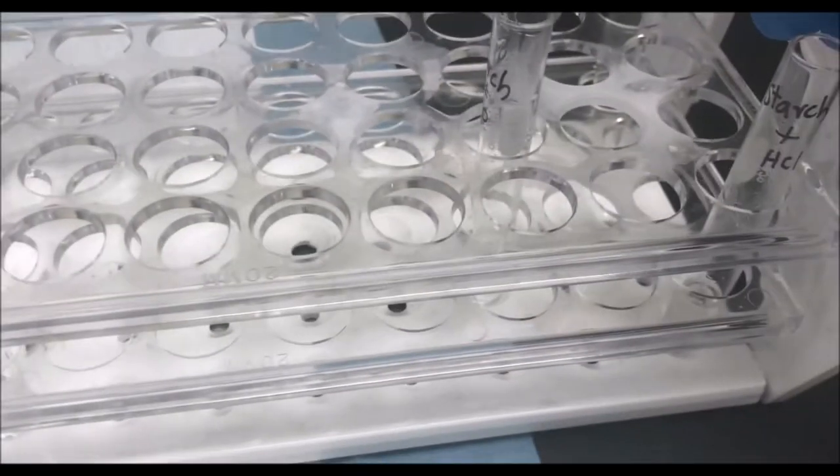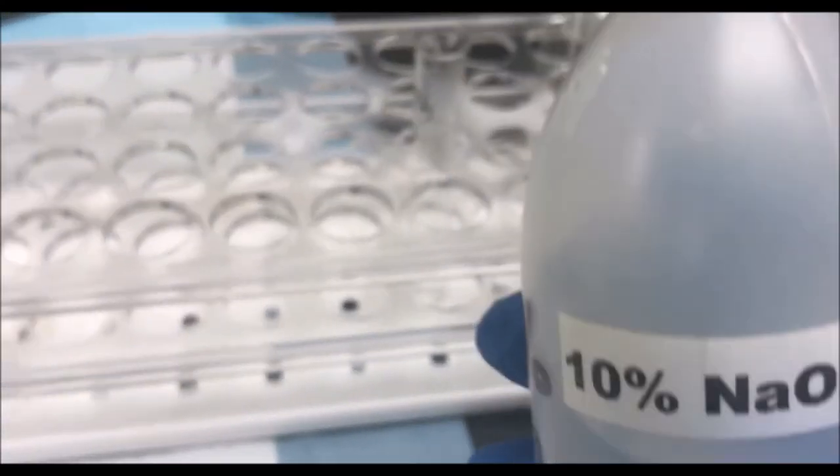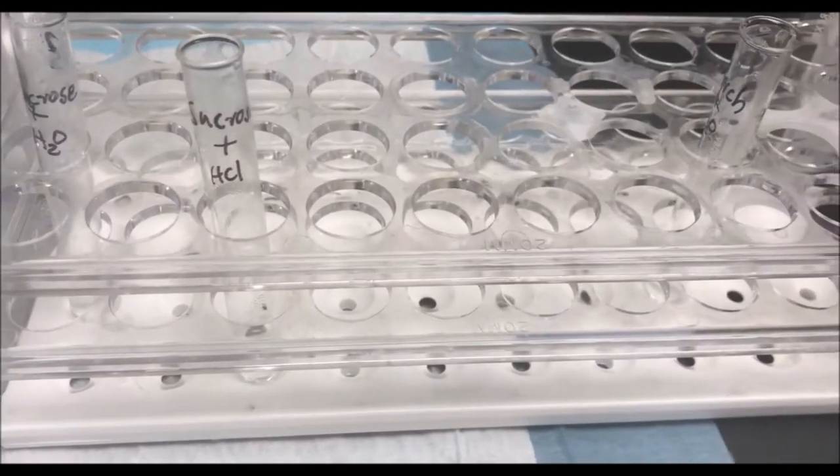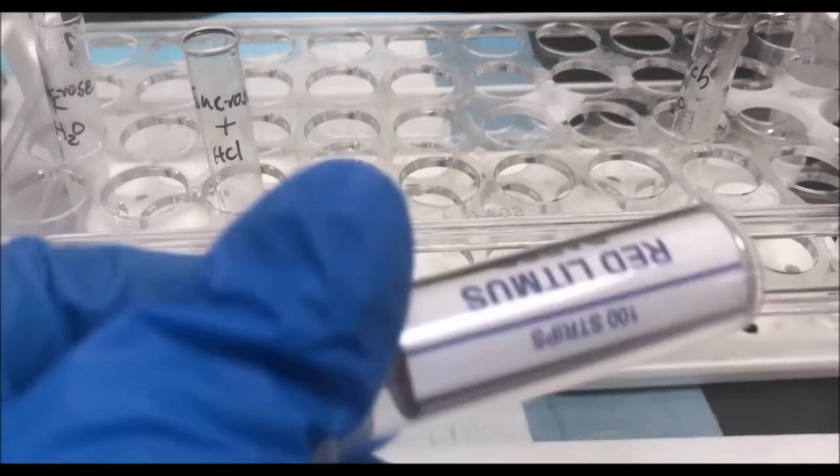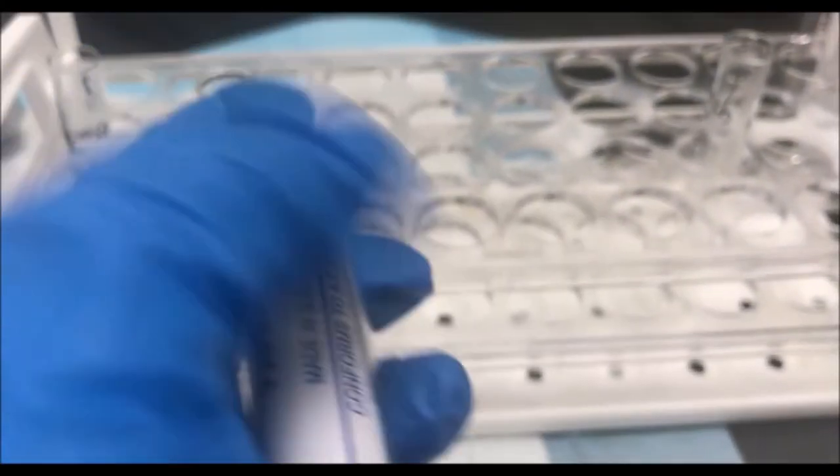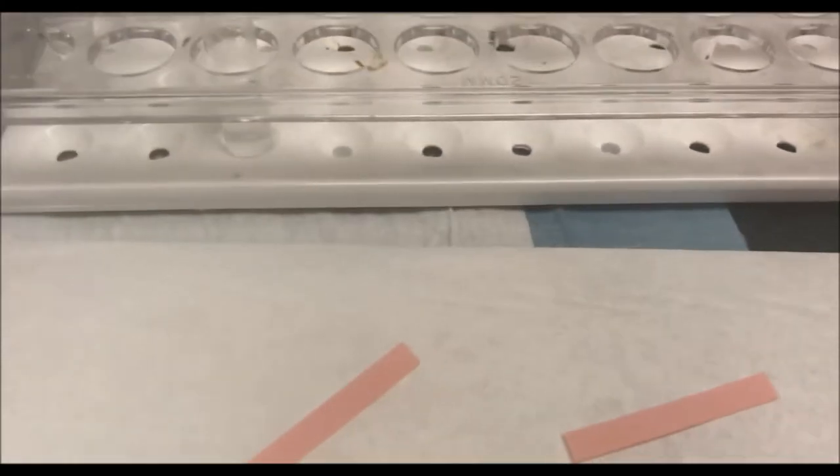To the samples containing hydrochloric acid, add 10% sodium hydroxide. Add 10% sodium hydroxide dropwise until one drop of the mixture turns the red litmus paper to blue, indicating hydrochloric acid has been neutralized.